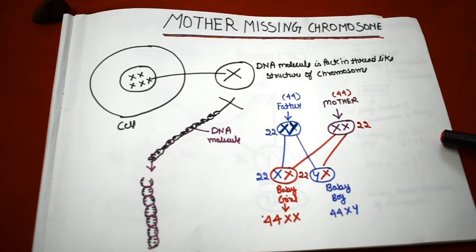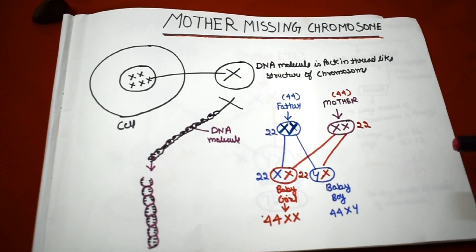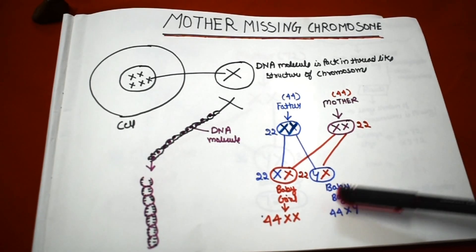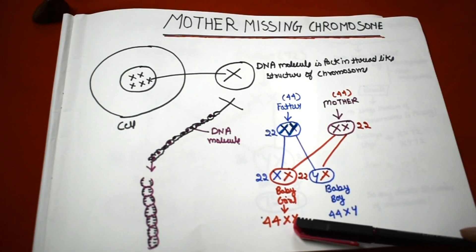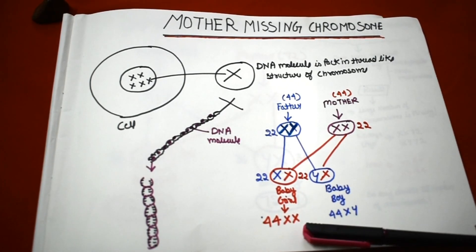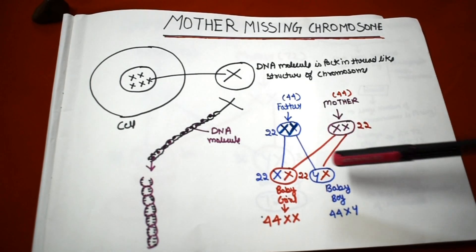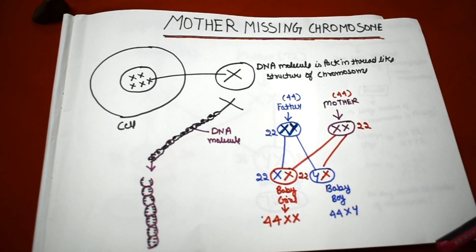We receive chromosomes through our father. Males or fathers have 44 autosomal chromosomes, and X and Y are gender chromosomes in their sperm. The female or mother has 44 chromosomes and X and X as sex chromosomes. A baby girl receives one X chromosome from the father and one X from the mother, giving her 44 plus XX. A baby boy receives Y from the father and X from the mother, for a total of 44 plus XY.